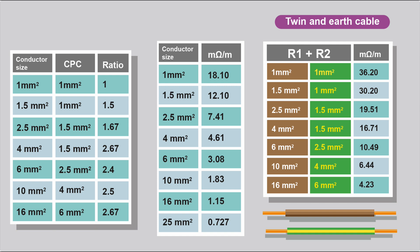We've got three tables here, which you would use for your twin-and-earth, the first table. We've got the conductor size, this would be the live or the neutral, and this is the CPC. In twin-and-earth, the line and neutral cable is the same cross-sectional area. The CPC is different, so there's the ratio.